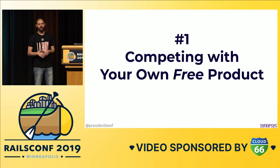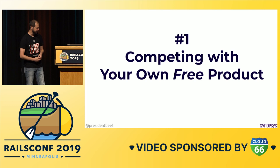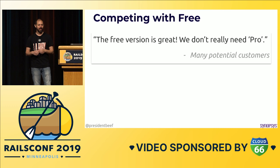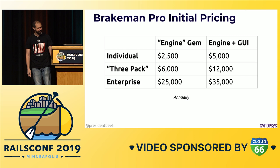These aren't actually in any particular order, but I would say this is one of the hardest things: when you have something that's open source and then you want people to start paying for something related to it, now you're competing not only with something that's free, but your own free thing that you are still maintaining and updating. I heard this a few times: 'Hey, the free version of Brakeman is great. We don't really need Pro.' And for me, that was like — wow, thanks for the compliment. But also, can you still buy my thing? It's hard to argue.